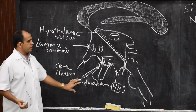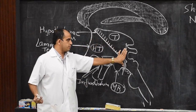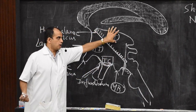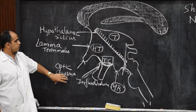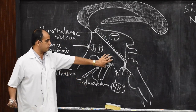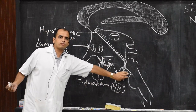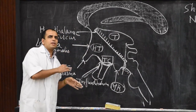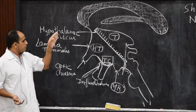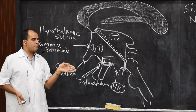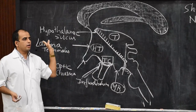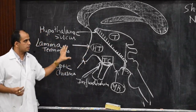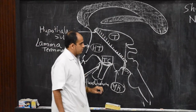To summarize the relations: anteriorly lamina terminalis, posteriorly an imaginary line behind the mammillary body, superiorly the thalamus, inferiorly the optic chiasma, infundibular part with tuber cinereum, mammillary body, and posterior perforated substance, laterally the internal capsule, and medially it is related to the cavity of the third ventricle.